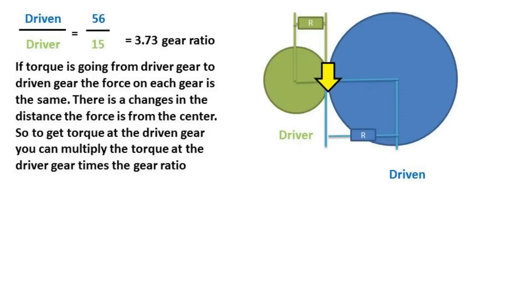Now let's talk about torque. If torque is going from the driver gear to the driven gear, the force on each gear is the same. There is a change in the distance the force is from the center of the gear. So to get the torque at the driven gear, you can multiply the torque at the driver gear times the gear ratio.